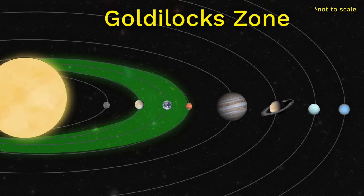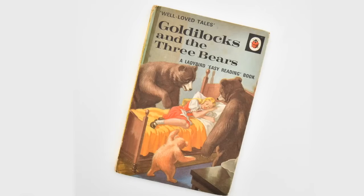Scientists have a special name for this zone around the Sun. They call it the Goldilocks zone, as in Goldilocks and the three bears. Have you heard the story?